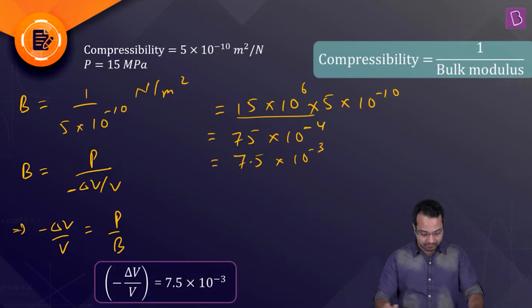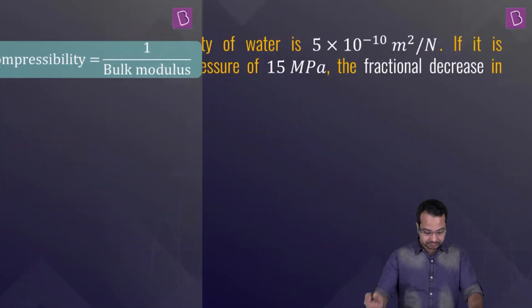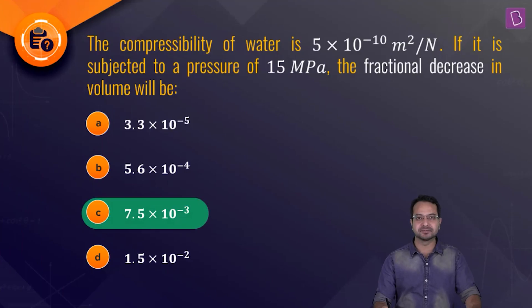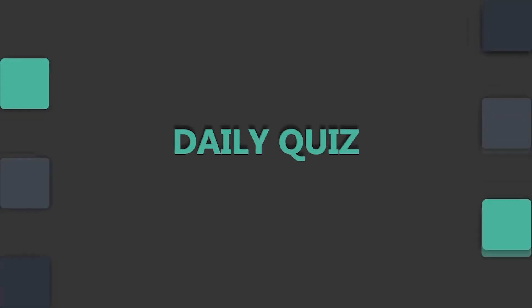Looking at the options, option C, 7.5×10⁻³, is the correct answer.